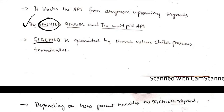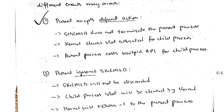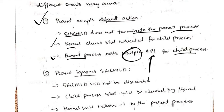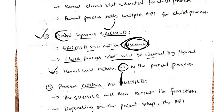SIGchild is generated when a child process terminates. Based on how the parent handles the SIGchild signal, different events may occur. The first is the default action — here SIGchild does not terminate the parent process, but the kernel will clear the slot for the child process and the parent process will call WAITPID so that the child process can complete execution. The second option for the parent is to ignore SIGchild — here the child process will be cleared and minus one will be returned by the kernel to the parent process.